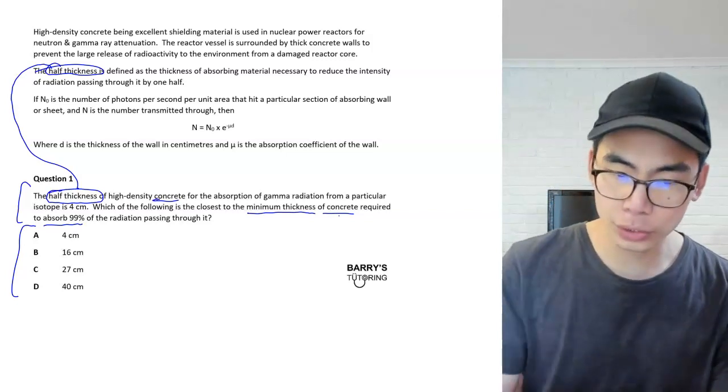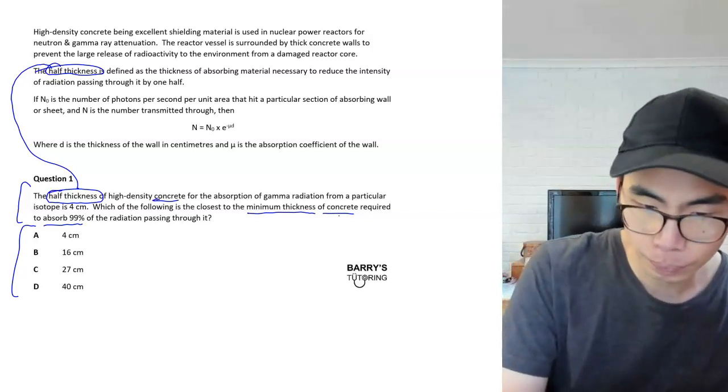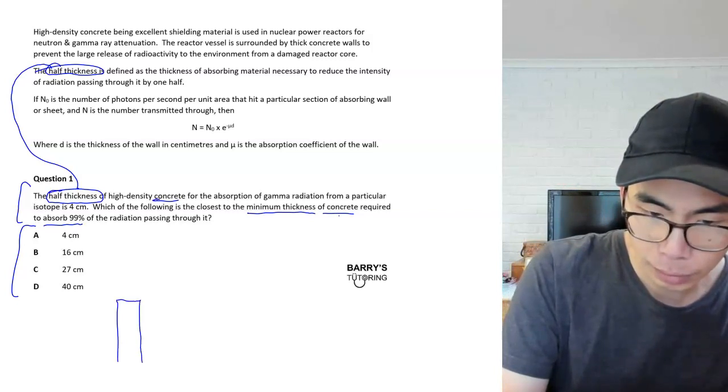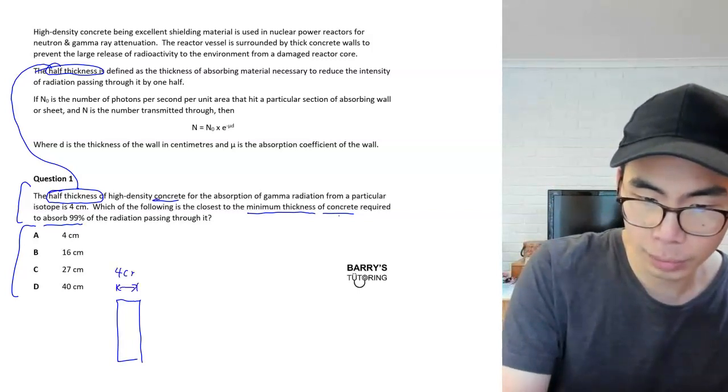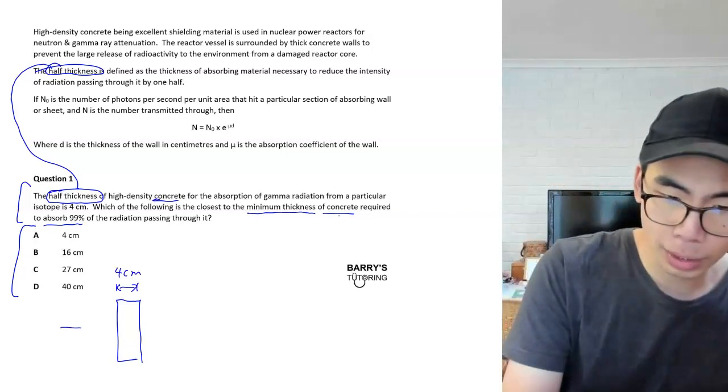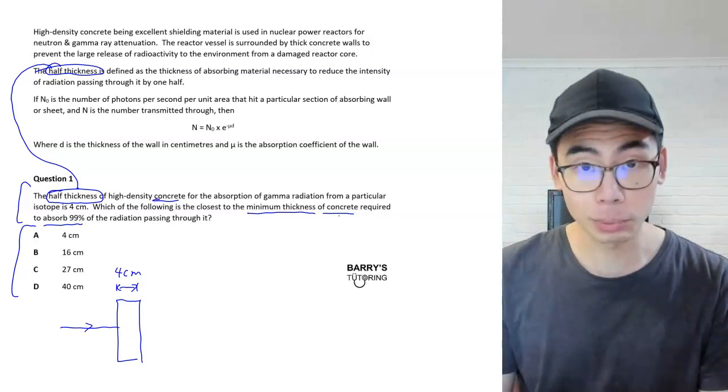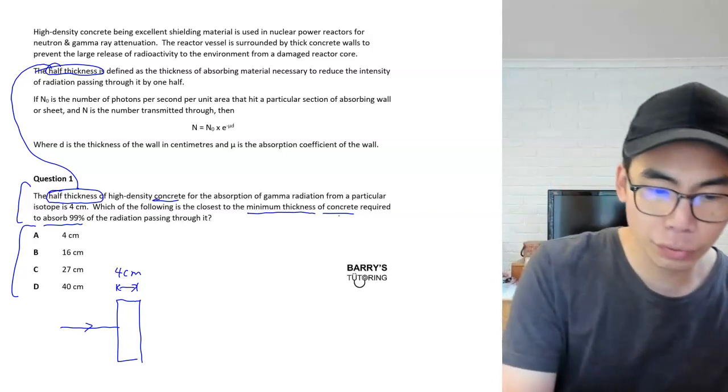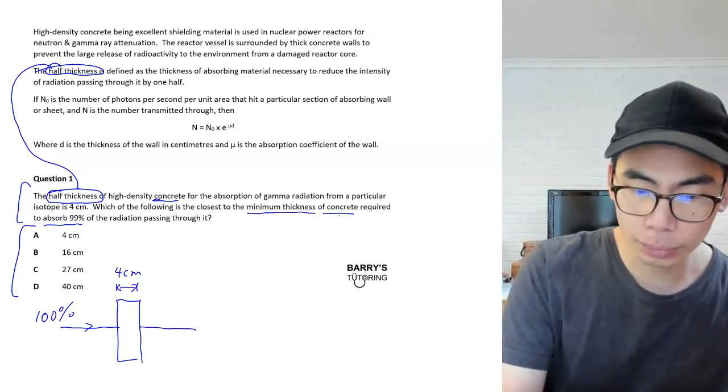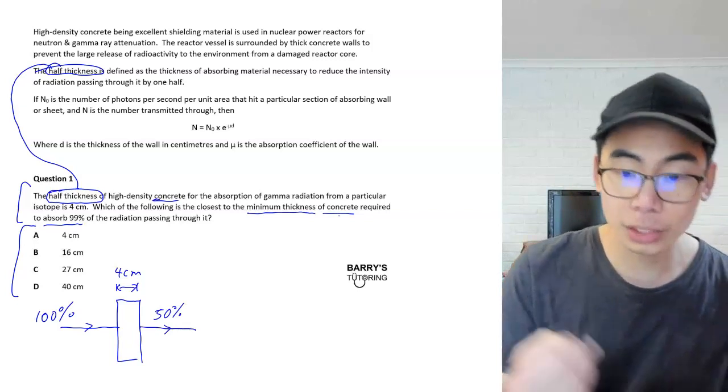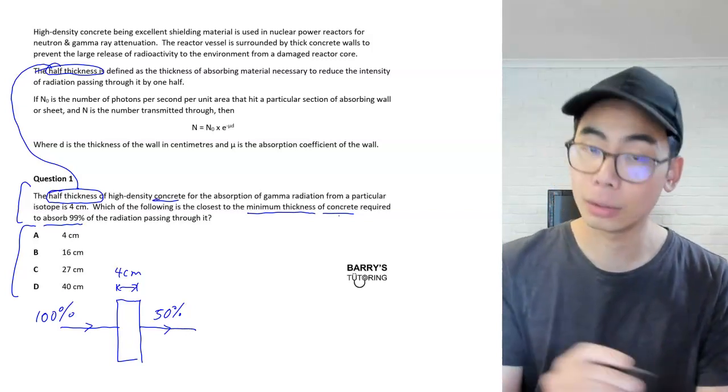So when we come back to the question stem about concrete in particular, they say that the half thickness is four centimeters. This is what they mean. If we had a bit of material, and let's say this is concrete, and this is four centimeters in thickness, if I was to pass radiation through it. Now, we don't know how much radiation is passing through, but let's just take 100%, just some arbitrary value. So if we had a certain amount of radiation, we know from the definition that 50% will get through. So that's what's meant by the half thickness, it's going to reduce the intensity of radiation passing through it by one half.